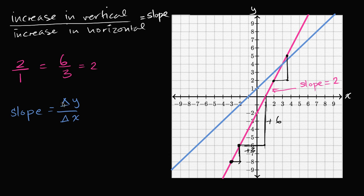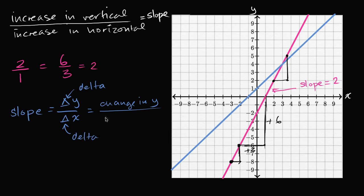You might ask: you said "change in" but then drew a triangle. That triangle is the Greek letter delta, a math symbol used to represent "change in." So slope is delta y — change in y — divided by delta x — change in x. If we want to find the slope of the blue line, we just have to find how much y changes for a given change in x.